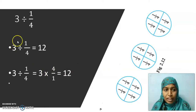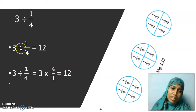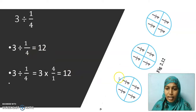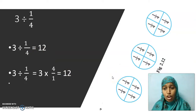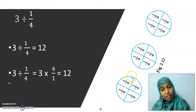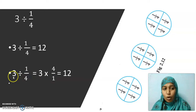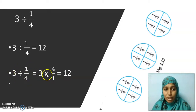Now, even if you get any big number like 112 divided by 5 by 6, you can easily find the answer. There will be no need to draw all these diagrams. It would be a very tedious job to draw 112 circles, divide each into 6 parts, and find how many 5 by 6 parts are there. So we have a system now: to divide a whole number by a fraction, it has to be changed into multiplication and the divisor should be changed upside down.